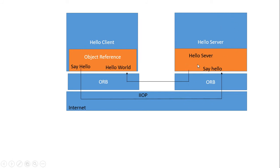The server replies back through the skeleton to the ORB interface and back to the client. So, the ORB is a class library that enables communication between Java IDL apps and other CORBA-compliant apps. IDL is the standard for CORBA, providing protocols between objects.